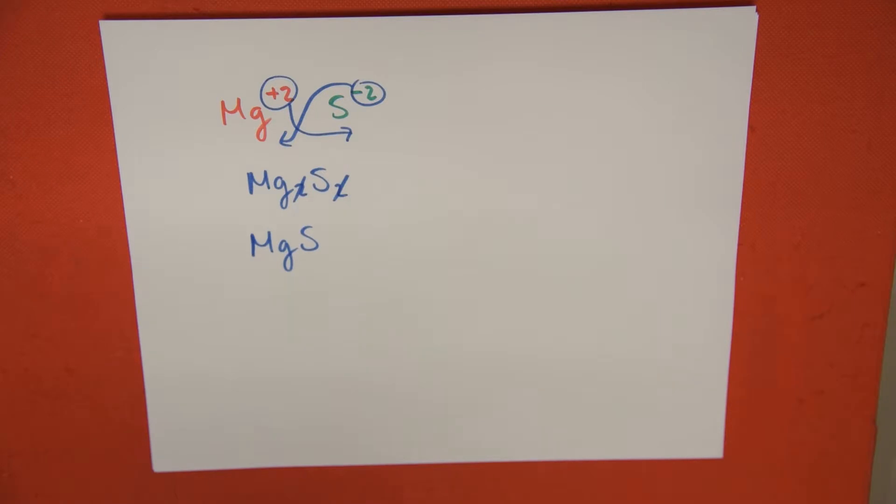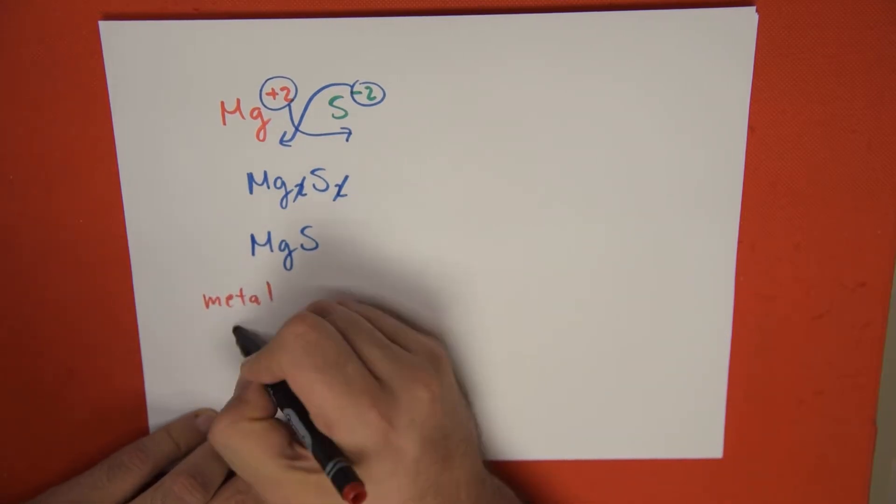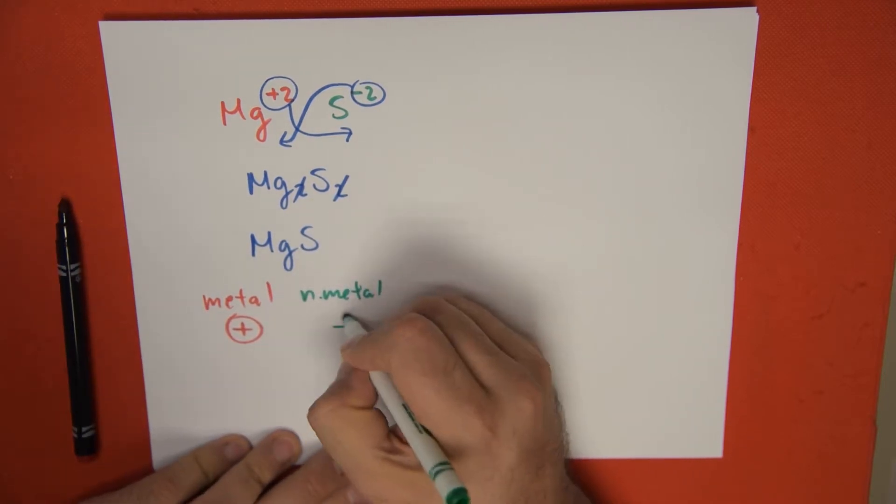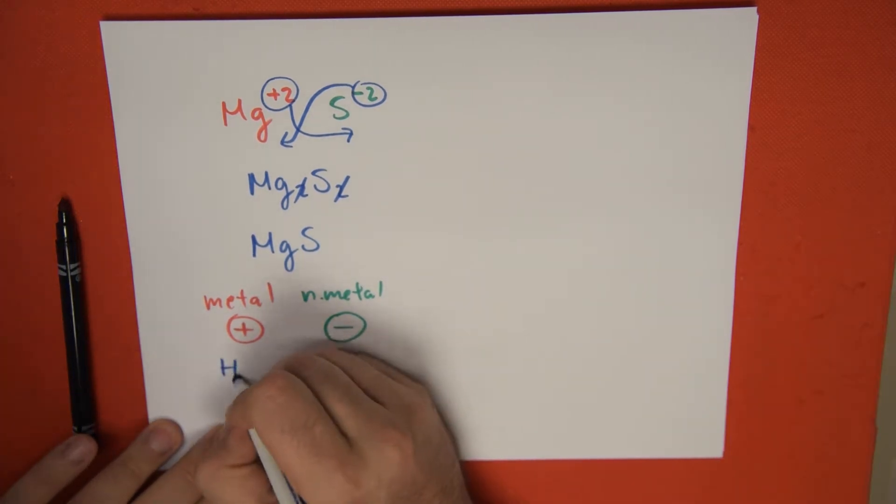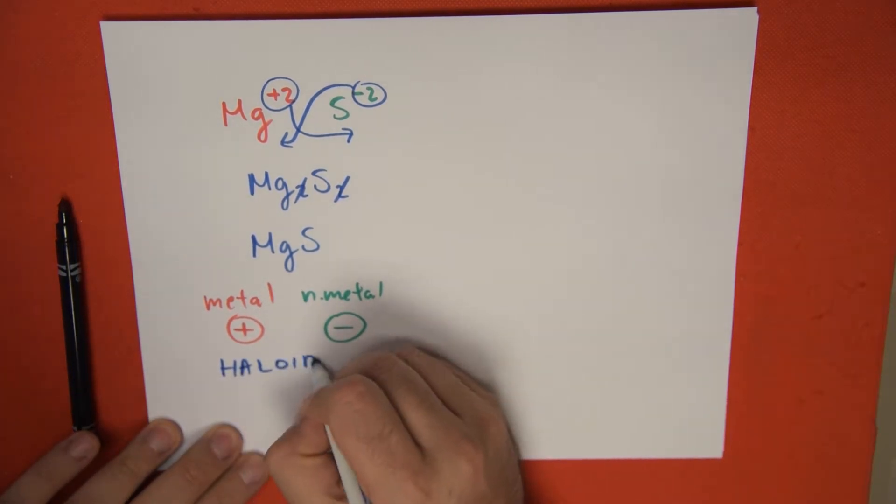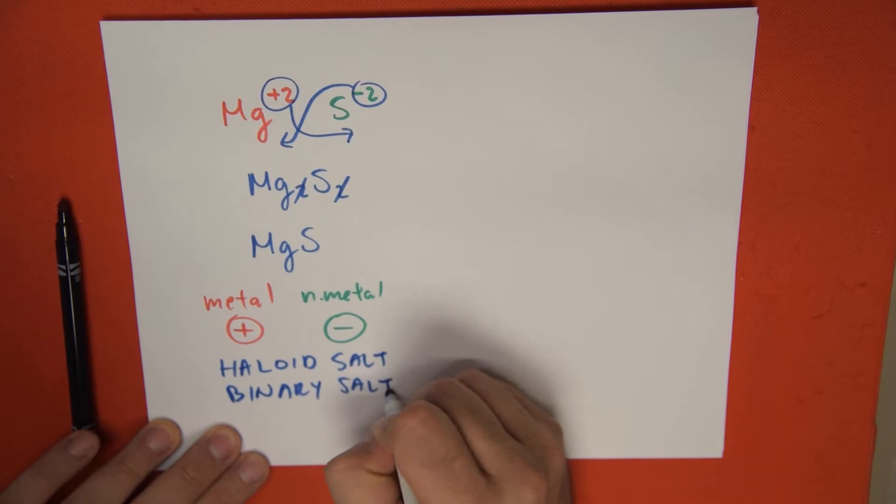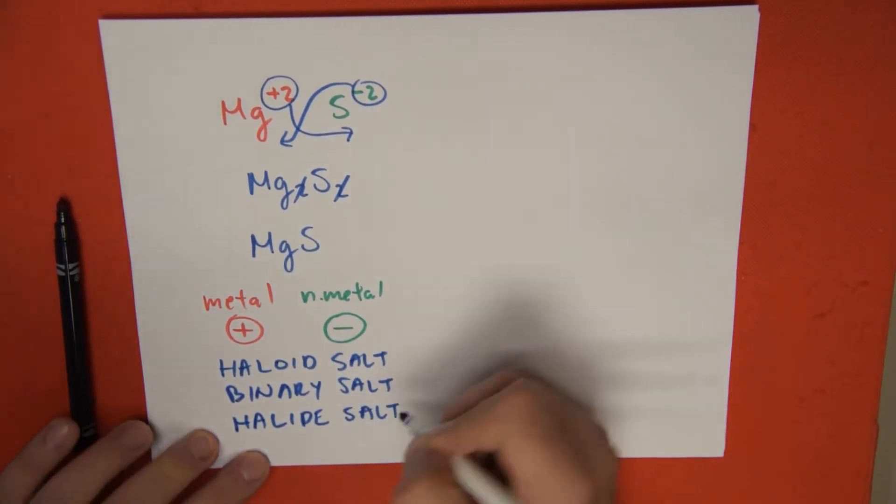So whenever we have a metal as a cation, and a non-metal as an anion, the result is these have different names. They can be haloid salt, which is synonymous to binary salt, which is also synonymous to halide salt. Why? Because most of them are made from halogens.